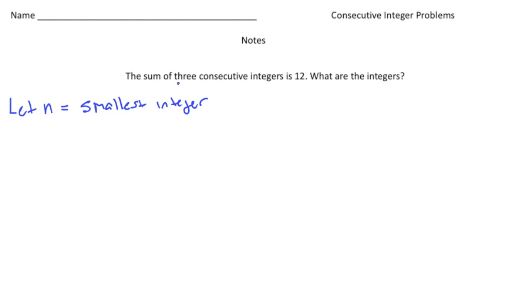So n is going to be the unknown, that's going to be the smallest integer. Now we know that we're going to be adding three consecutive, so that means the next integer, or the middle one, is going to be one more than this one. So I'm going to let n plus 1 be the middle one, the middle integer. And then finally, I'm going to let n plus 2 be the largest integer. So again, n is going to be the smallest integer, and if we add one more to that, that gives us our next one. If we add two more to the smallest, that gives us the third one. But one thing we know is that all three of the integers add up to 12.